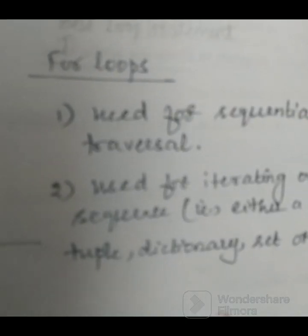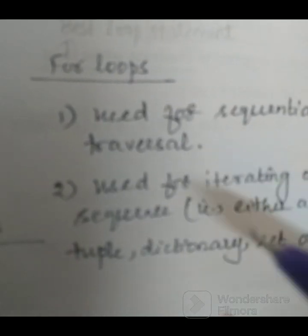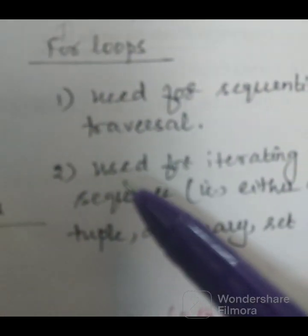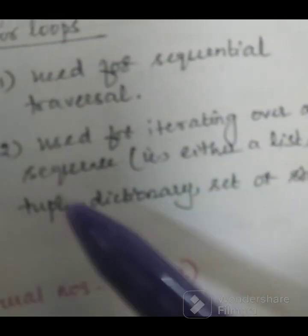Students, we will see for loops in Python. For loops are used for sequential traversal, for loops are used for iterating over a sequence.